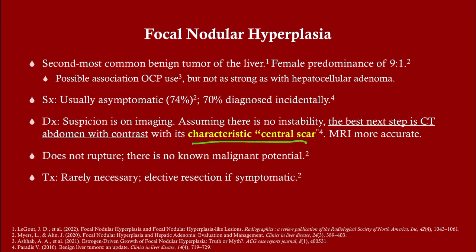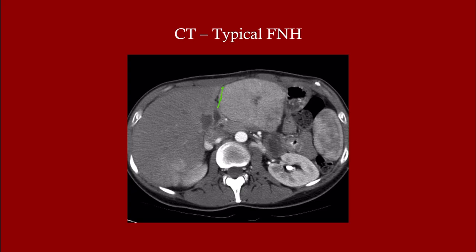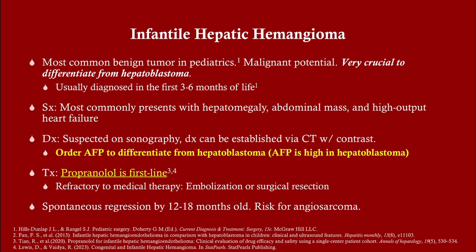FNH tends not to rupture, so patients will usually be stable — though rupture can occur. CT abdomen with contrast is your best next step assuming the patient is not unstable. Treatment is rarely necessary. If symptoms do develop, resection is indicated. On imaging you can see the tumor with a central scar, which is very typical of FNH.